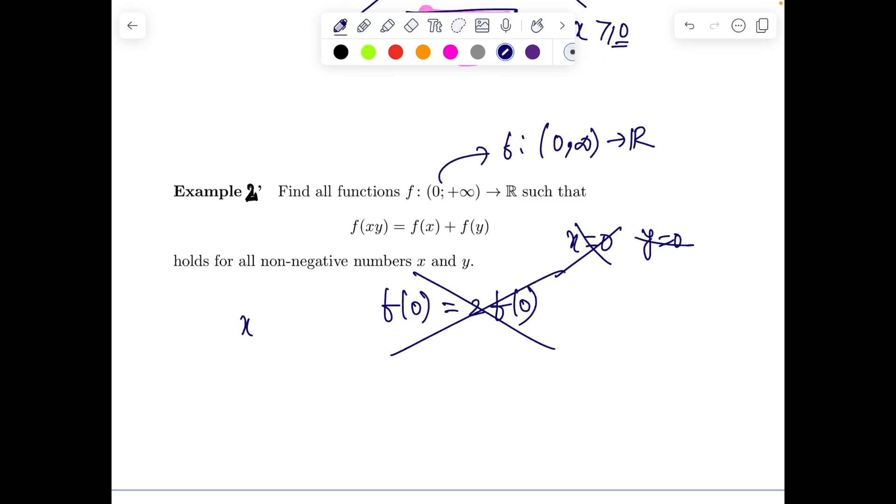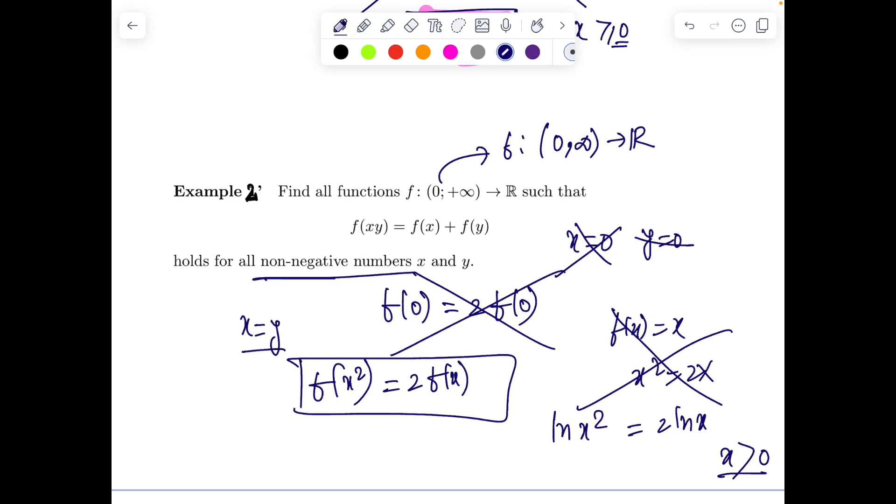There is a usual technique: put x = y and write f(x²) = 2f(x). You can get a guess from here. If f(x) is also x, this will not be valid. So x is not possible. This is a log feel. Log(x²) = 2log(x), provided x > 0. So it seems to be log.